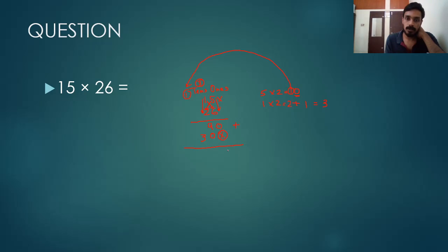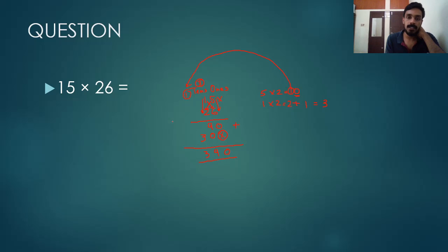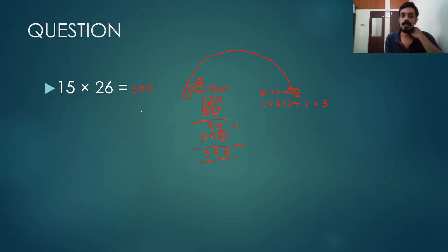Now we add the two rows together. 0 plus 0 is 0. 9 plus 0 is 9. 3 plus 0 is 3. So the answer is 390. The answer for 15 into 26 is 390.